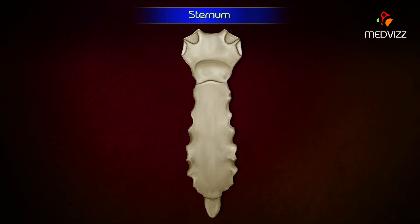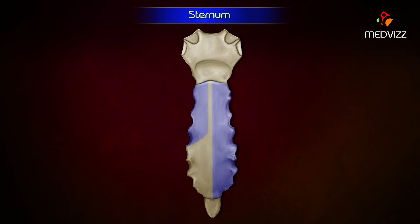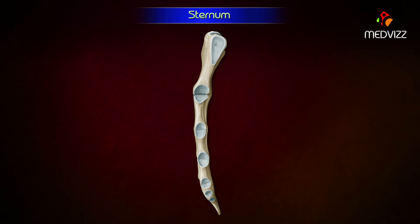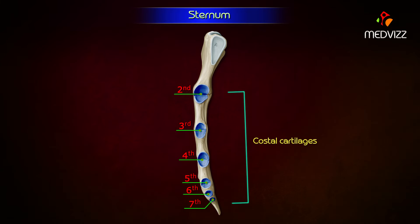The posterior surface is smooth and slightly concave. The lower part of the posterior surface gives origin to the sternocostalis muscle. On the right side of the median plane, the posterior surface is related to the pleura, which separates it from the lung. On the left side of the median plane, the upper half of the body is related to the pleura and the lower half to the pericardium. Its lateral border articulates with the second to the seventh costal cartilages to form synovial joints.